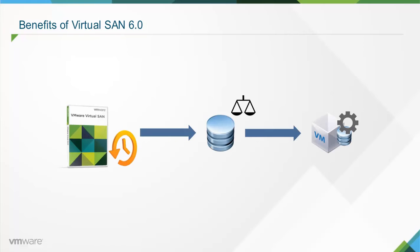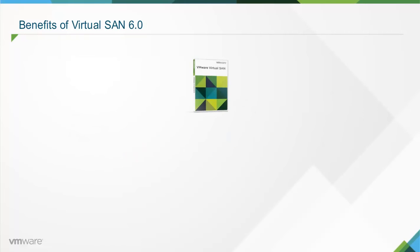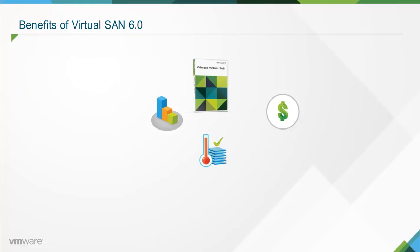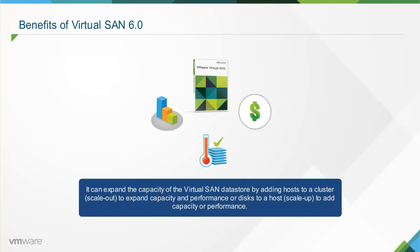The automated self-tuning capability of Virtual SAN 6.0 helps to rebalance storage resources and align them with assigned virtual machine storage service levels. Virtual SAN helps in linear scaling of performance, capacity, and cost. It can expand the capacity of the Virtual SAN data store by adding hosts to a cluster — scale out — to expand capacity and performance, or adding disks to a host — scale up — to add capacity or performance.